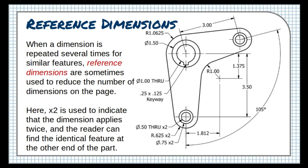When a dimension is repeated several times for similar features, reference dimensions are sometimes used to reduce the number of dimensions on the page. Here, times two is used to indicate that the dimension applies twice, and the reader can find the identical feature on the other end of the part.